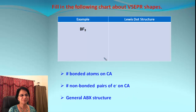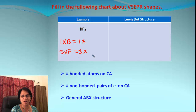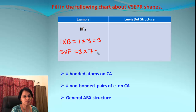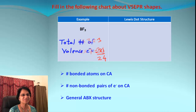Our next molecule is BF₃. Let's find the number of valence electrons. We have one boron atom in group 3, giving 3 electrons. Fluorine is in group 17, giving 7 electrons from each fluorine — seven times three is 21. Total electrons: 24.